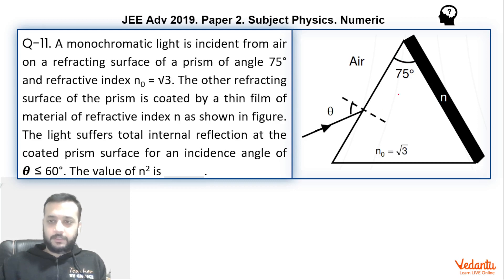So let's see what's happening over here. There is a prism which is made up of refractive index root 3 having an angle of 75 degrees. There is a ray which enters from air and it goes and suffers a TIR at this surface.